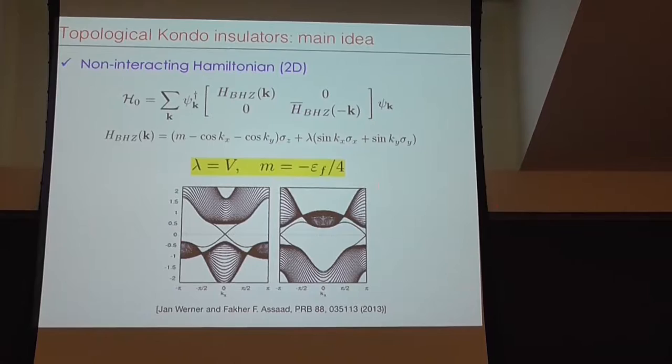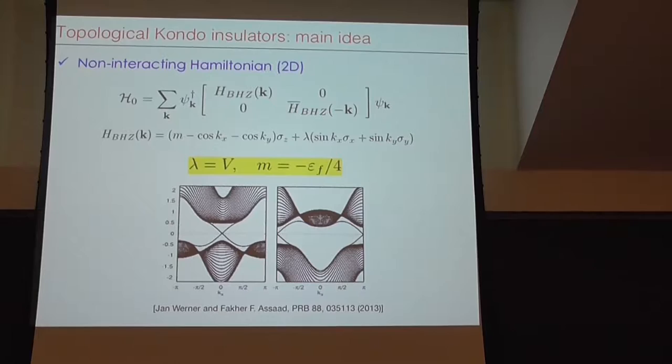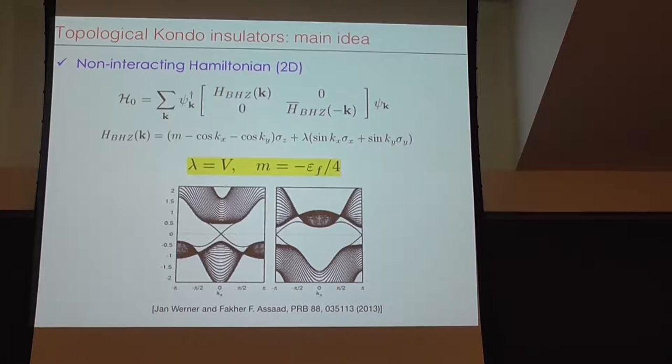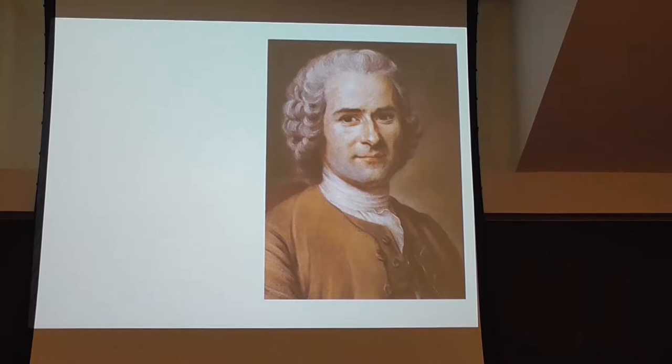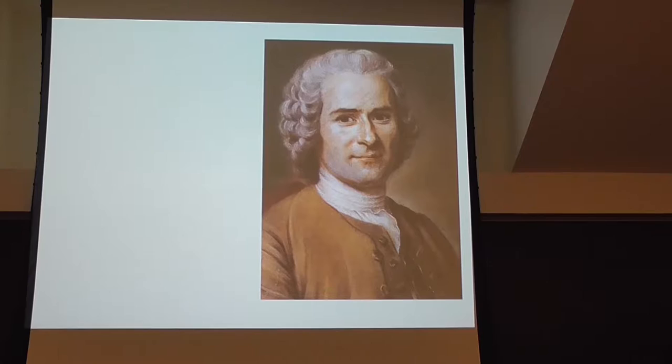Because when you couple D and F orbitals together, you transfer the angular momentum number, and between D and F the difference is one. So in this case, if I assume this is D and this is F, that would be linear in k. If I work with S and F, that would be cubic in k. The important thing is this is odd in momentum. The basis here is chosen so we have two-degenerate Kramers D and two-degenerate F, just for simplicity.